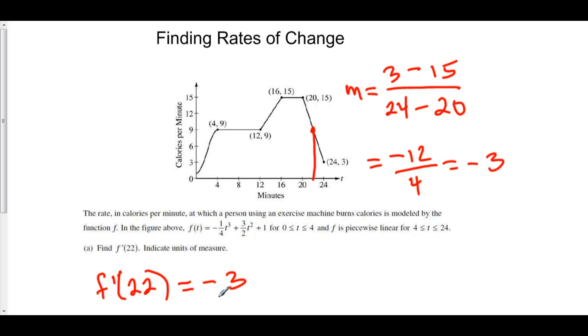Now, let's take a look at units of measure. Our numerator is in terms of calories per minute. So here we have calories per minute. And our denominator, time, is in terms of minutes. So this is calories per minute per minute.